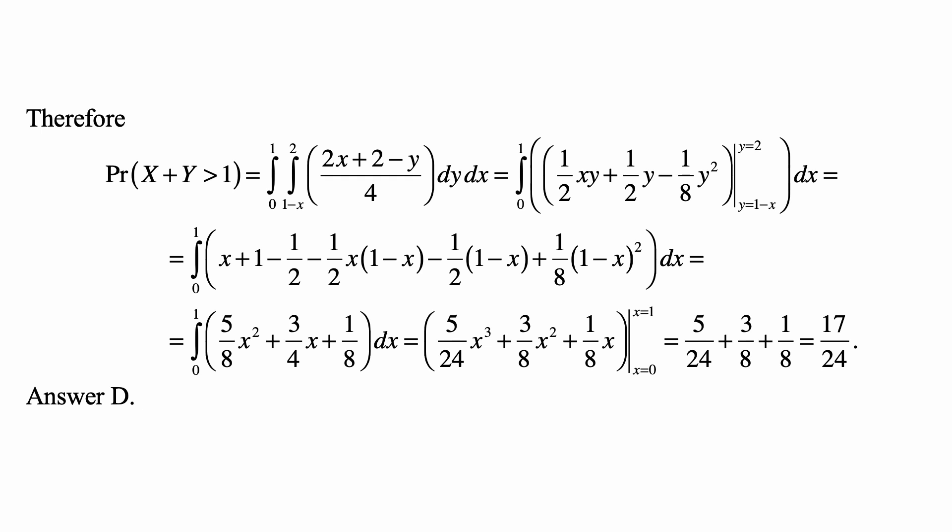So we do the integral with respect to y first. Well, 2x over 4, that's the same as 1/2 x, and the integral of that with respect to y is 1/2 x times y, so 1/2 xy. And then 2 over 4 is 1/2. The integral of that is 1/2 y with respect to y. And minus y over 4, the integral of that with respect to y is minus 1/8 y squared.